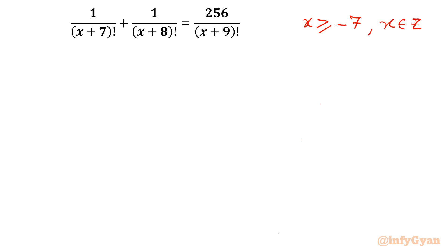We can write x must be greater than negative 7 and where x belongs to integer. Now, let me begin this video by writing recursive formula, which we will use ultimately. What is recursive formula? It is n factorial is equal to n times n minus 1 factorial. This formula is called recursive formula. We will use this.